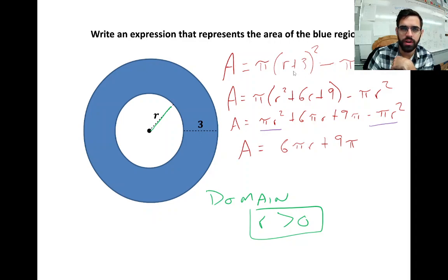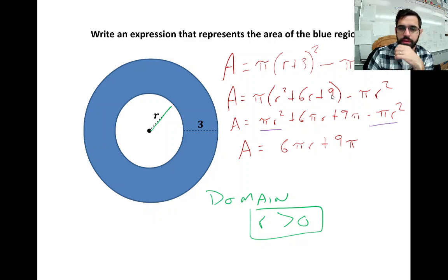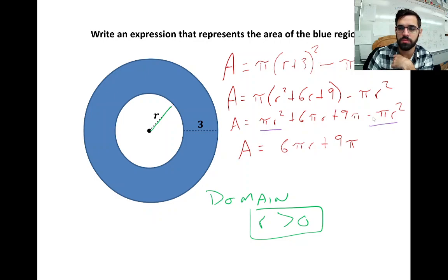This is a quadratic we can simplify. There's a pi on there, but since pi is a number, we can treat it like any other coefficient. We can FOIL out (r + 3)², distribute the pi, and notice we have like terms: πr² at the front and -πr² at the back. Those cancel out, leaving us with 6πr + 9π.